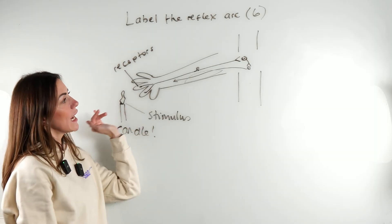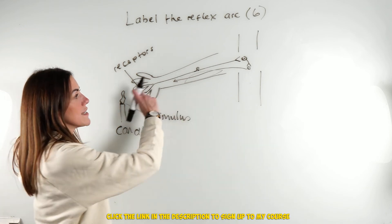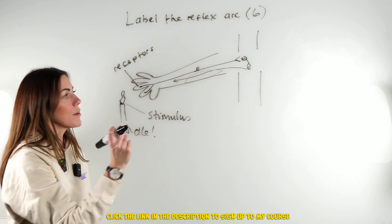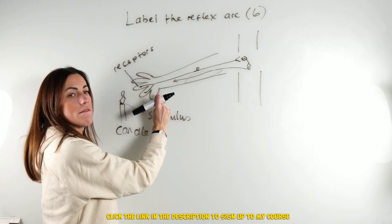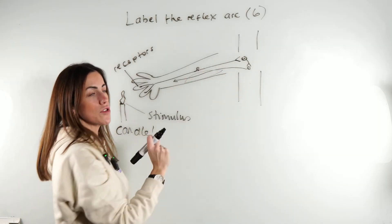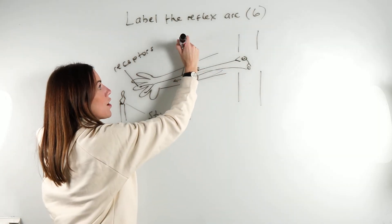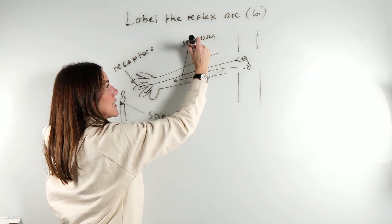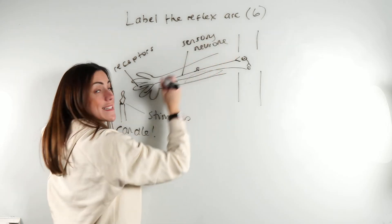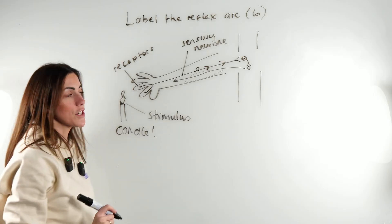Next, we're going to get an electrical impulse sent down this neuron. Because this neuron is going from the receptors into the central nervous system, we know that is a sensory neuron and it's carrying the electrical impulse in that direction.